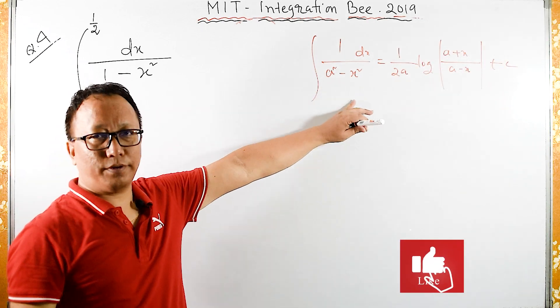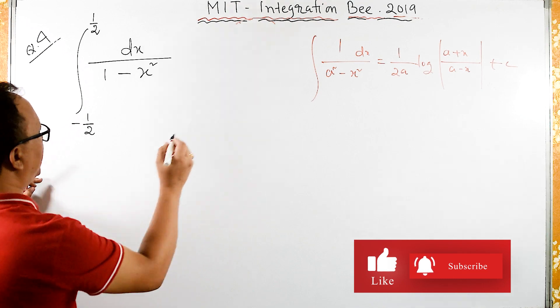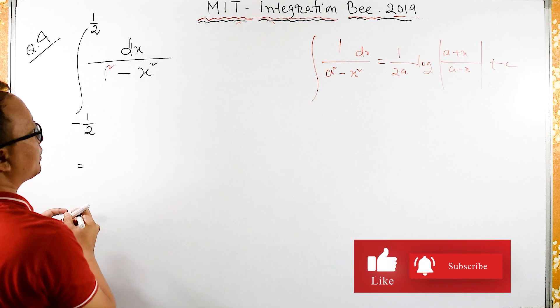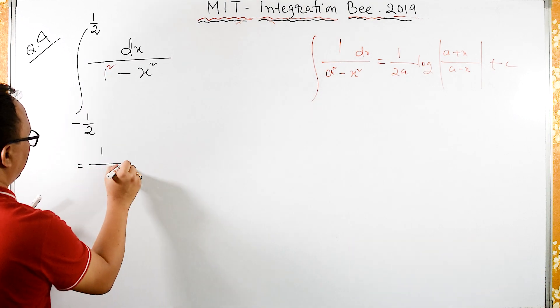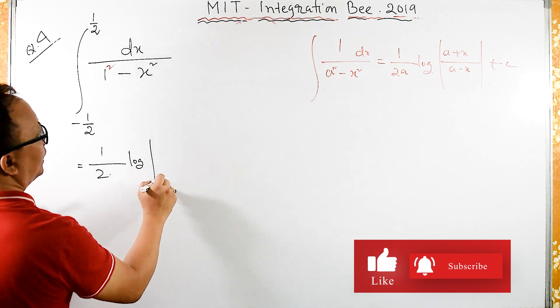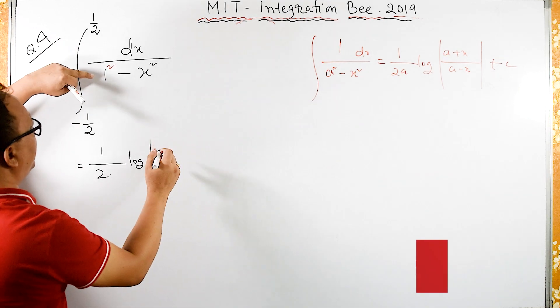So I will use this formula over here. So this equals to 1 by, so if you have 1 I can write here 1 square. So 1 by 2 into 1 is 1 log of here a plus x, here 1